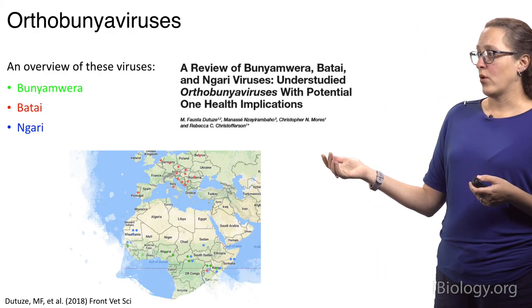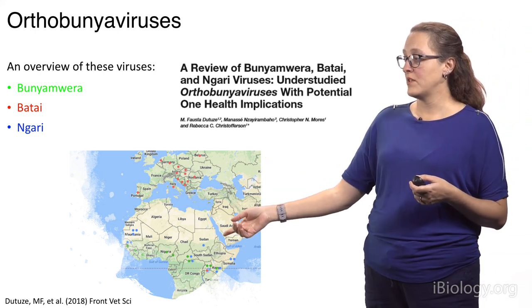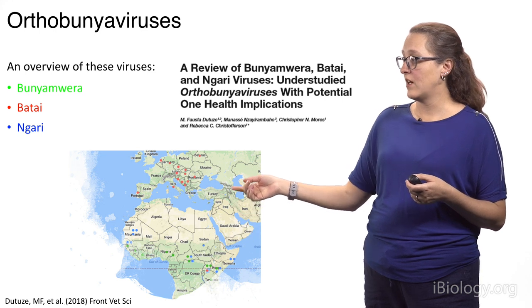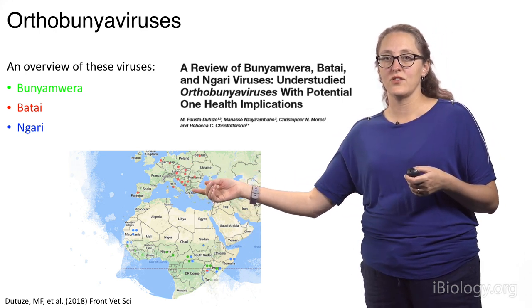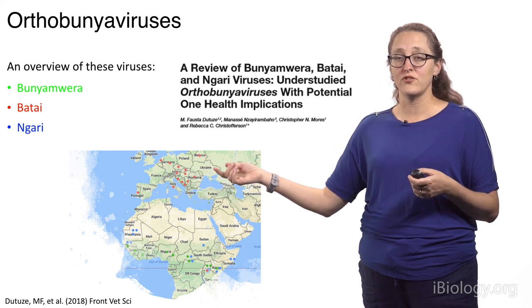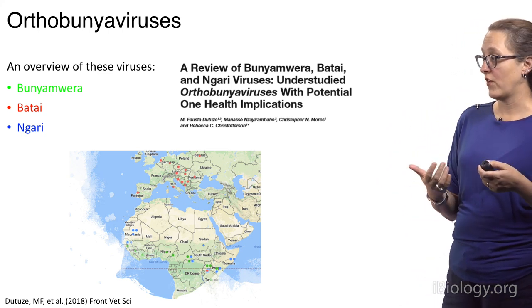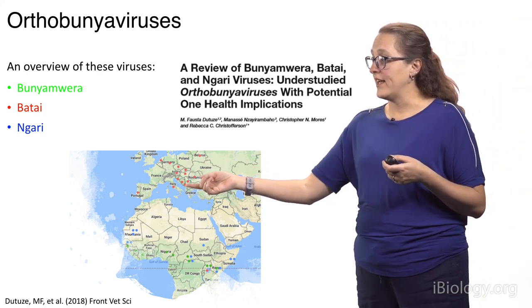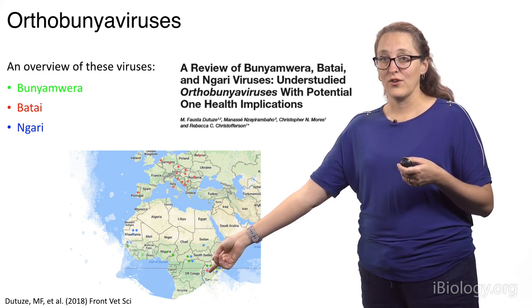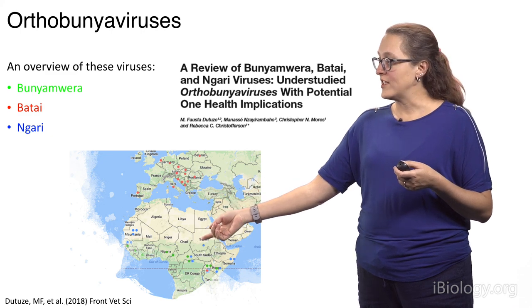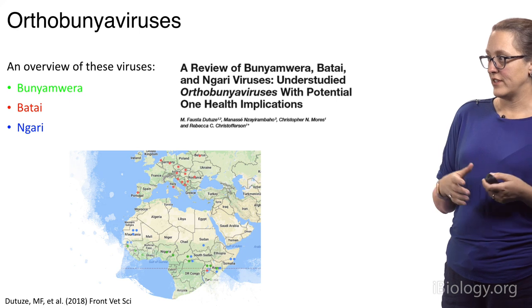An overview of these three orthobunyaviruses showed that their distribution is somewhat sporadic. The red dots pertain to batai, which is sort of associated with European transmission and is maintained in a bird-mosquito cycle as far as we know. Batai has that one isolation way back in the 50s or 60s from Uganda and then primarily in Europe, whereas bunyamwera and ngari have stayed in this sort of African distribution.